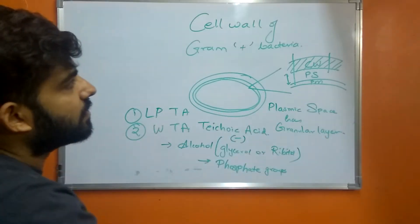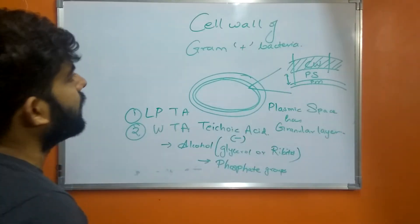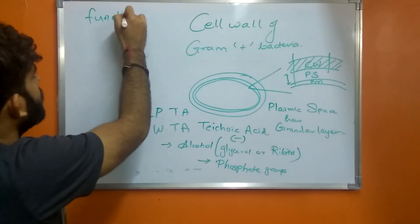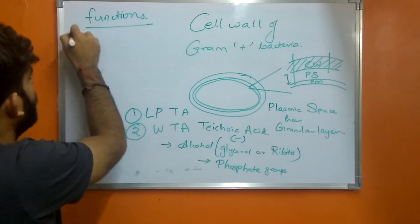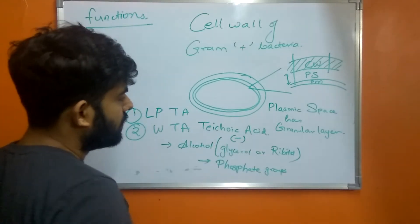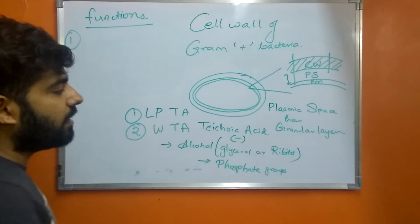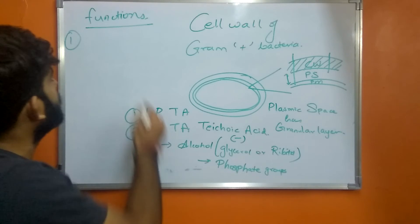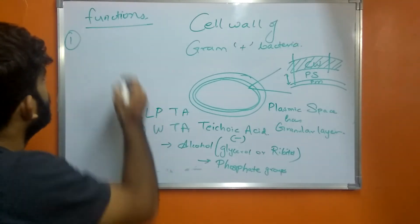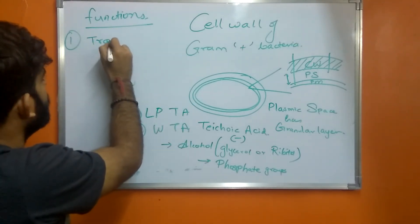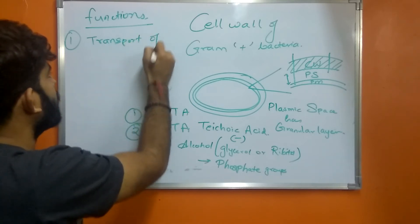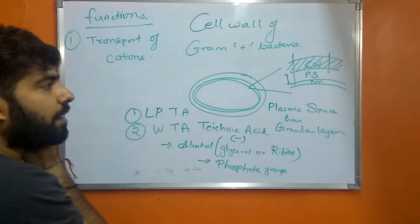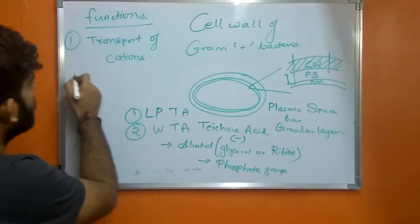If I talk about the functions of the teichoic acid present in the cell wall of gram-positive bacteria: the first function is that, as teichoic acid is negative in charge, it may help in the transport of cations in and out of the cell.